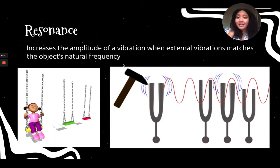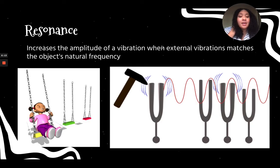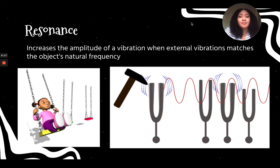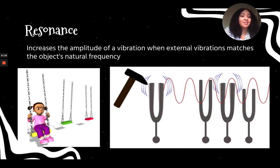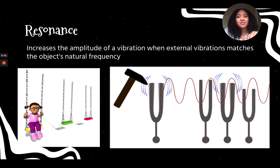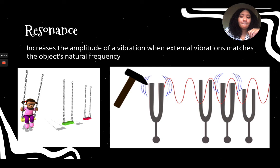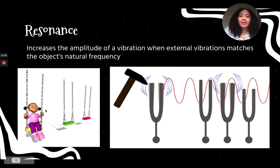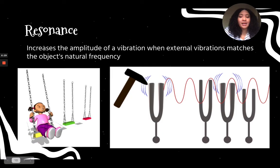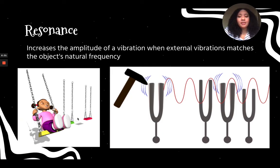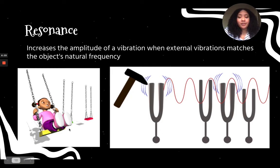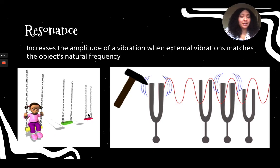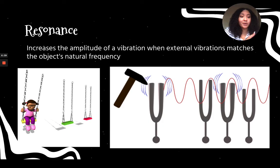And finally, there is a thing called resonance. That's when there's an increase of amplitude of a vibration when these external vibrations match the object's natural frequency. In this GIF right here, this person is swinging back and forth. And as this person is swinging, the other swings also move with it. That's because the natural frequency is being matched, and it could actually vibrate even more.